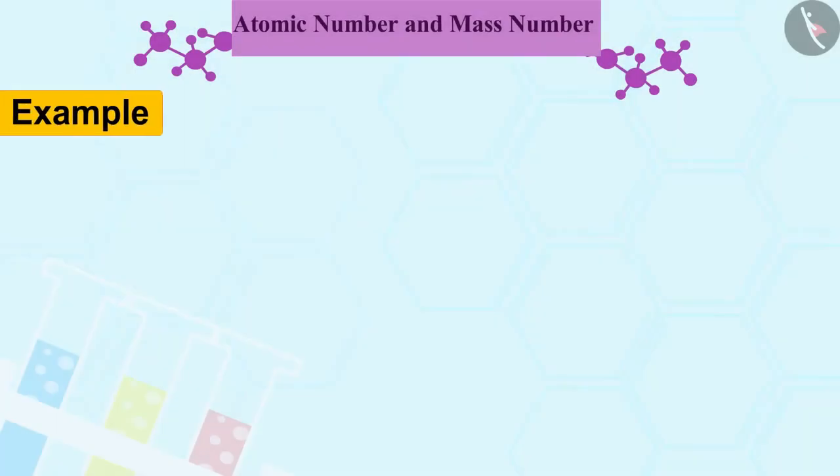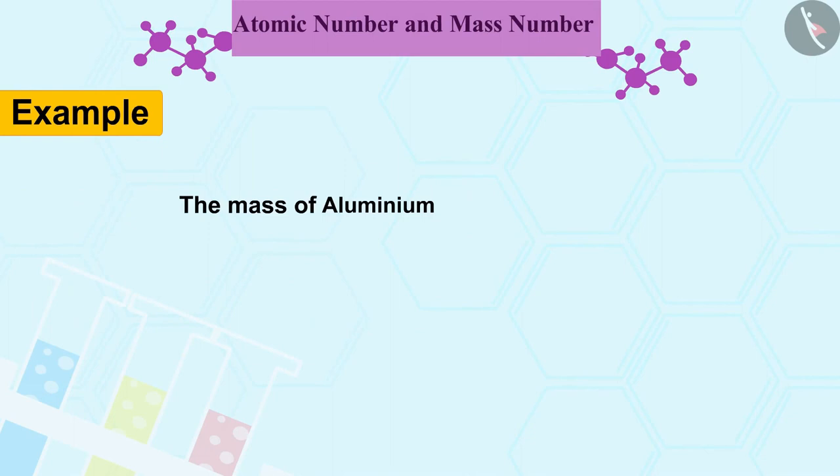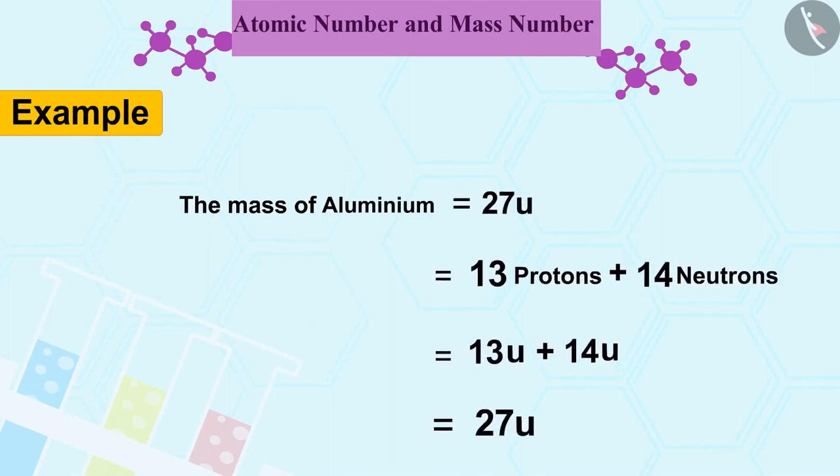For example, the mass of carbon is 12u because it consists of 6 protons and 6 neutrons. Similarly, the mass of aluminum is 27u because it has 13 protons and 14 neutrons.